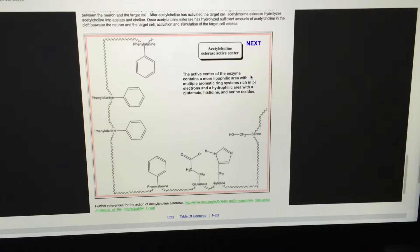If you look on the right-hand side, you will see several amino acid residues: serine, histidine, and glutamate residues. These residues tend to attract the other part, the acetyl part of the acetylcholine molecule.